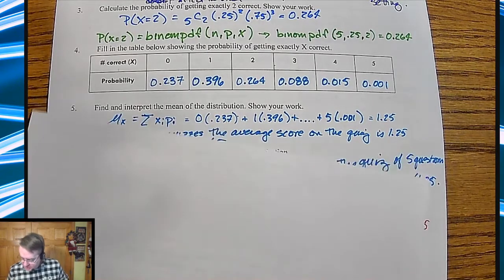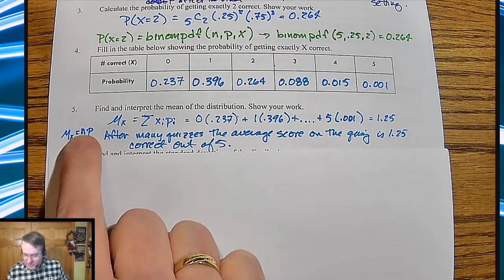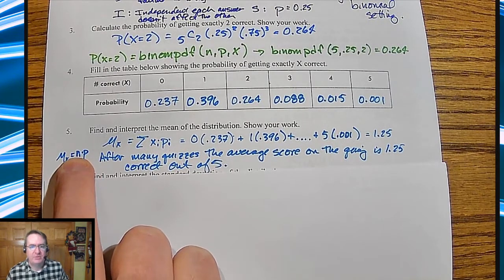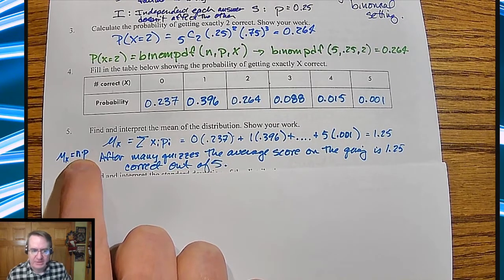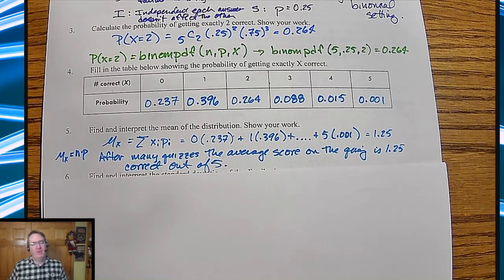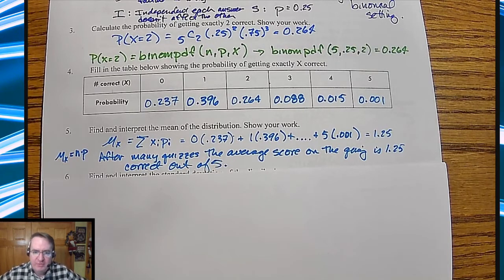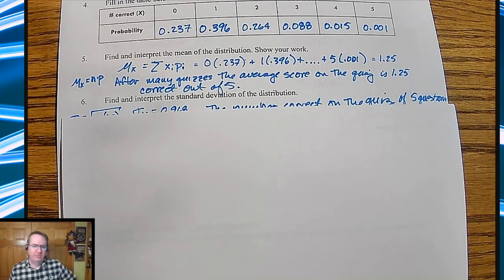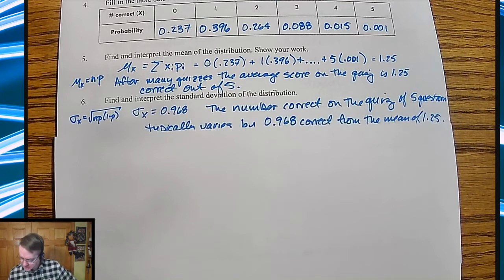The shortcut turns out to be this: if you know your probability is P and you have N trials, the mean is just the product N times P. So in this case, five times 0.25 gives you 1.25 — you're going to average 1.25 correct questions.